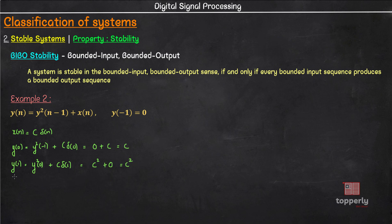Next, y(2) = y(1)² + c·δ(2) which is c⁴ + 0 or c⁴. In similar fashion, extending all the way to y(n) we have y(n-1)² + c·δ(n) which will be c^(2^n).